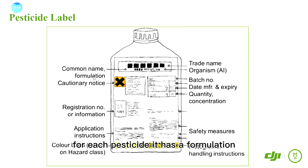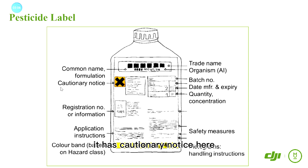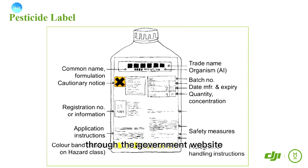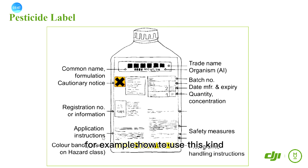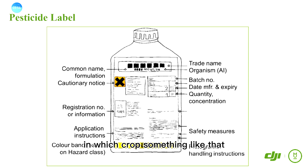For each pesticide, it has a formulation and also a cautionary notice, because the pesticide is always potentially harmful. Here is the registration number or information — you can check whether the pesticide is fake or not through the government website using the registration number. Here are also the application instructions: for example, how to use this kind of pesticide, how much amount per hectare you will use, and in which crop.